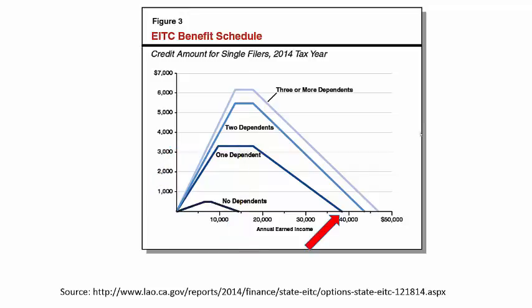Finally, at earnings levels above $18,000, the amount of the credit begins to decrease with earnings until it is phased out completely at earned income of around $38,000.